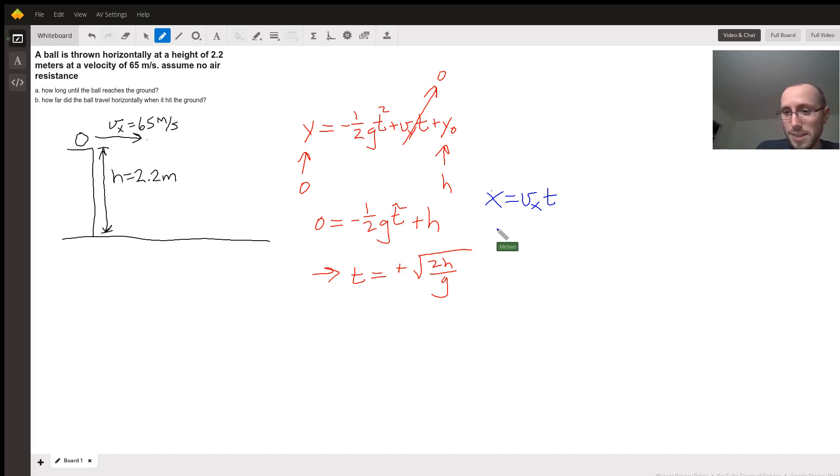So in this case, we've got an initial velocity in the x direction of 65 meters per second. That's our vx. And from part A, we know what the time is. So the total distance that the ball travels when it hits the ground is just vx times, I'll just put in the answer that we got for t, the square root of 2h over g. And that's it.